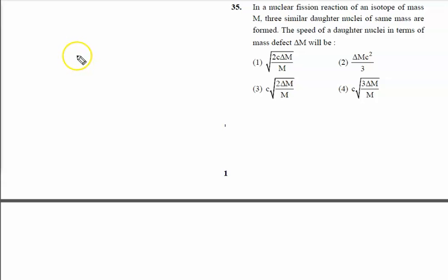In a nuclear fission reaction, fission means splitting of an isotope of mass M. Three similar daughter nuclei of same mass are formed. It means mass of each nucleus is M by three, M by three, and M by three.